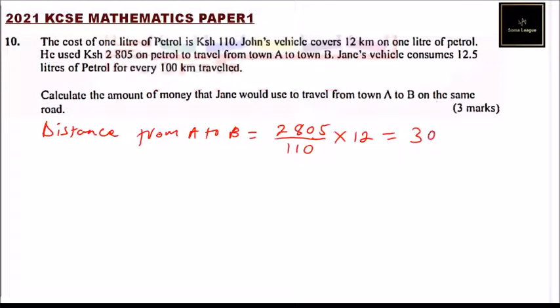You will be able to find that the number of kilometers were 306. Now that we have the distance from A, so we come to Jane.